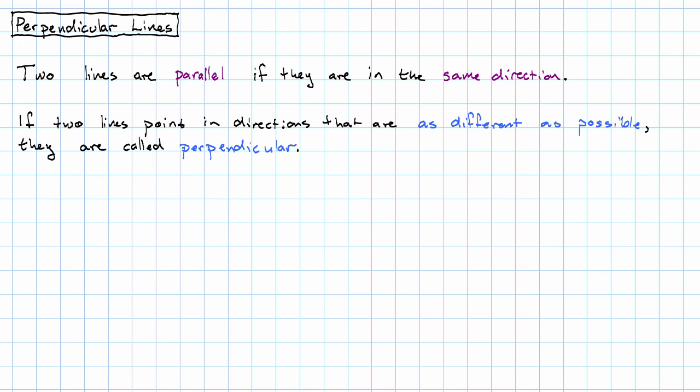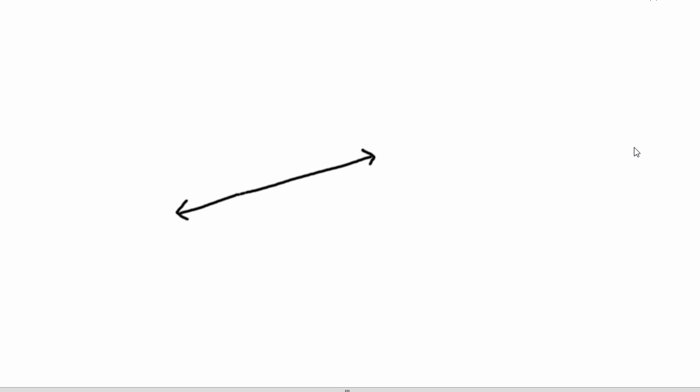Let's see what this actually looks like. So here's a line, and I'm going to take this line and I'm going to rotate it. Notice as I do that, this angle between the two lines is getting bigger and bigger, and this angle is getting smaller and smaller.